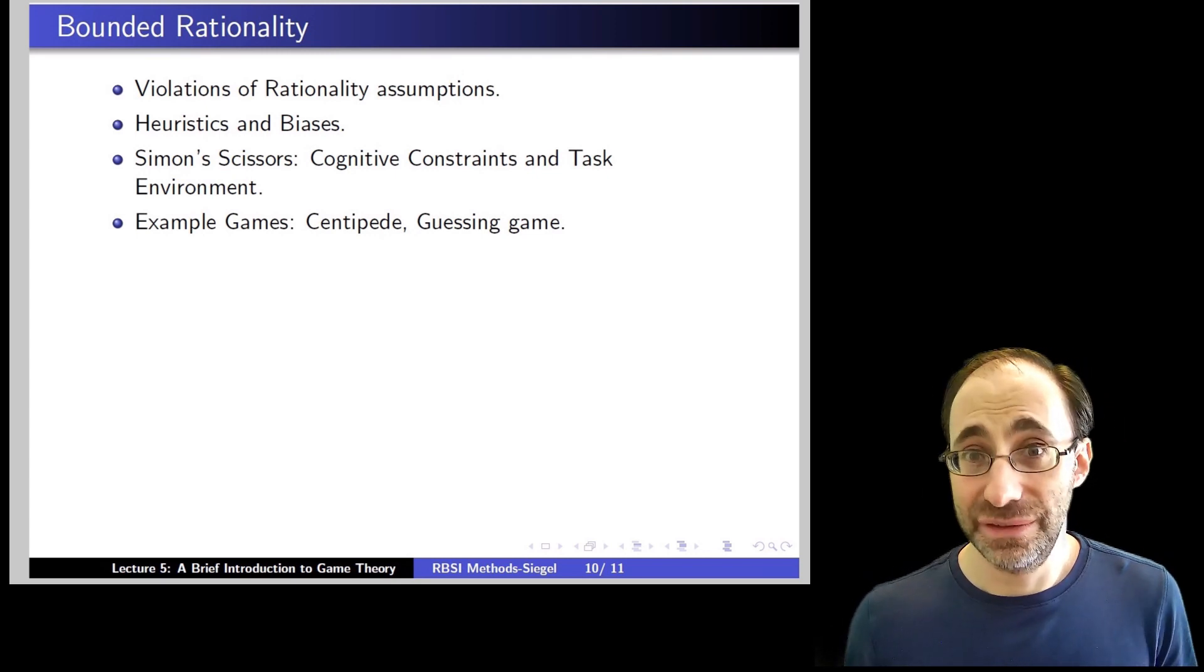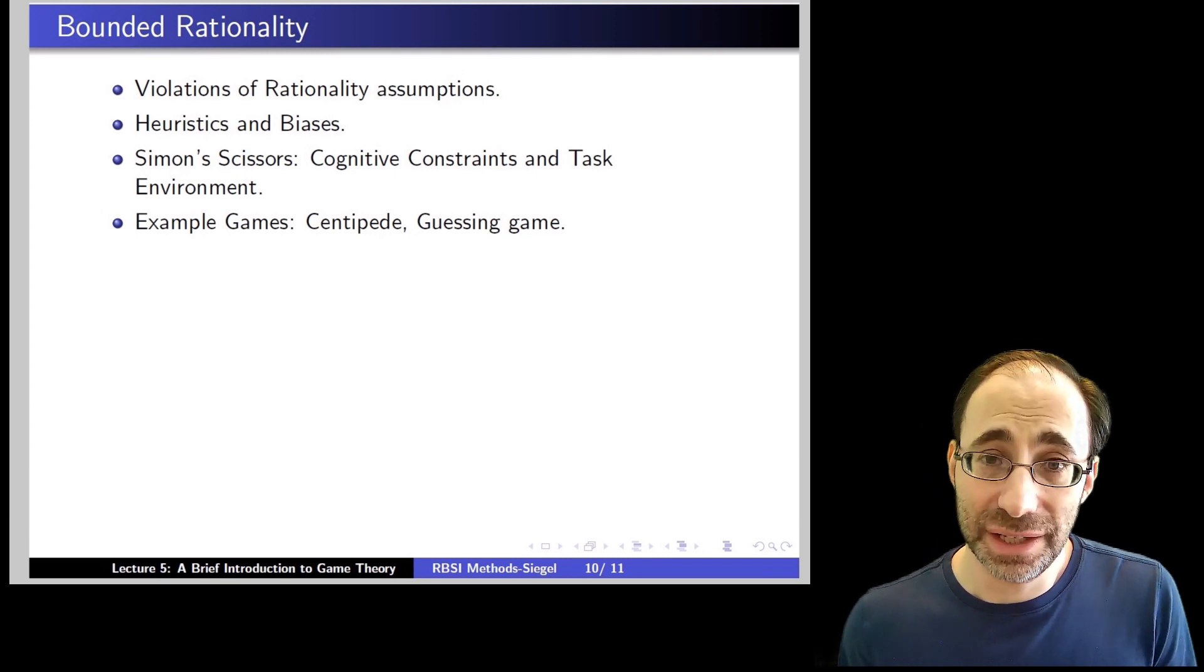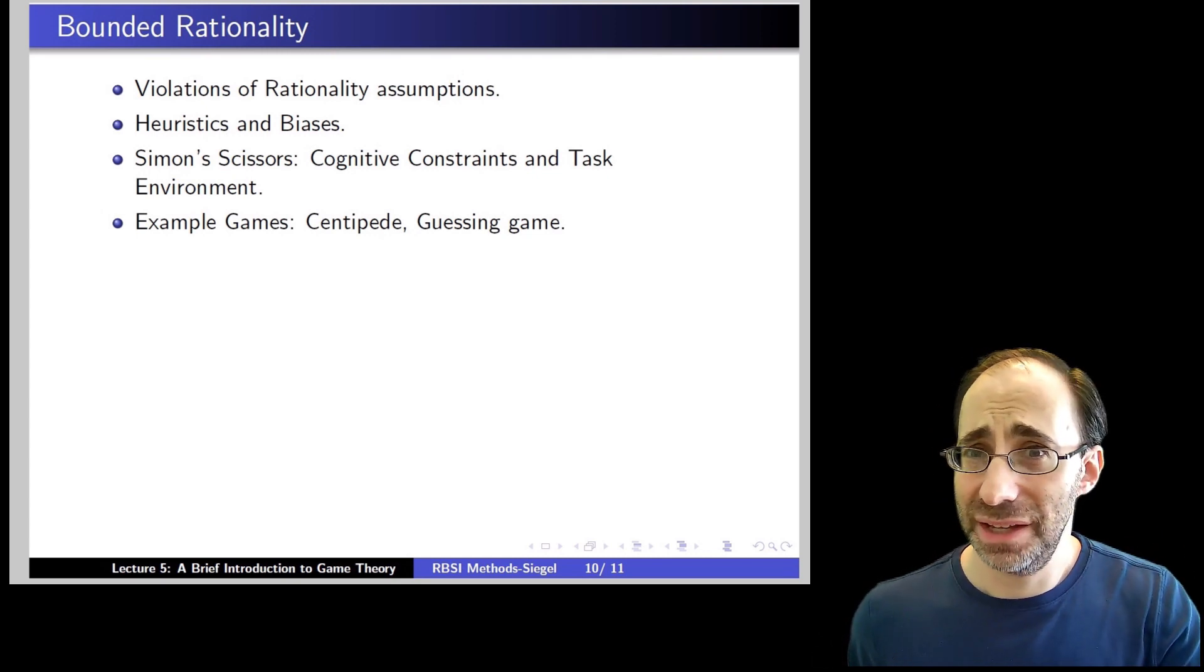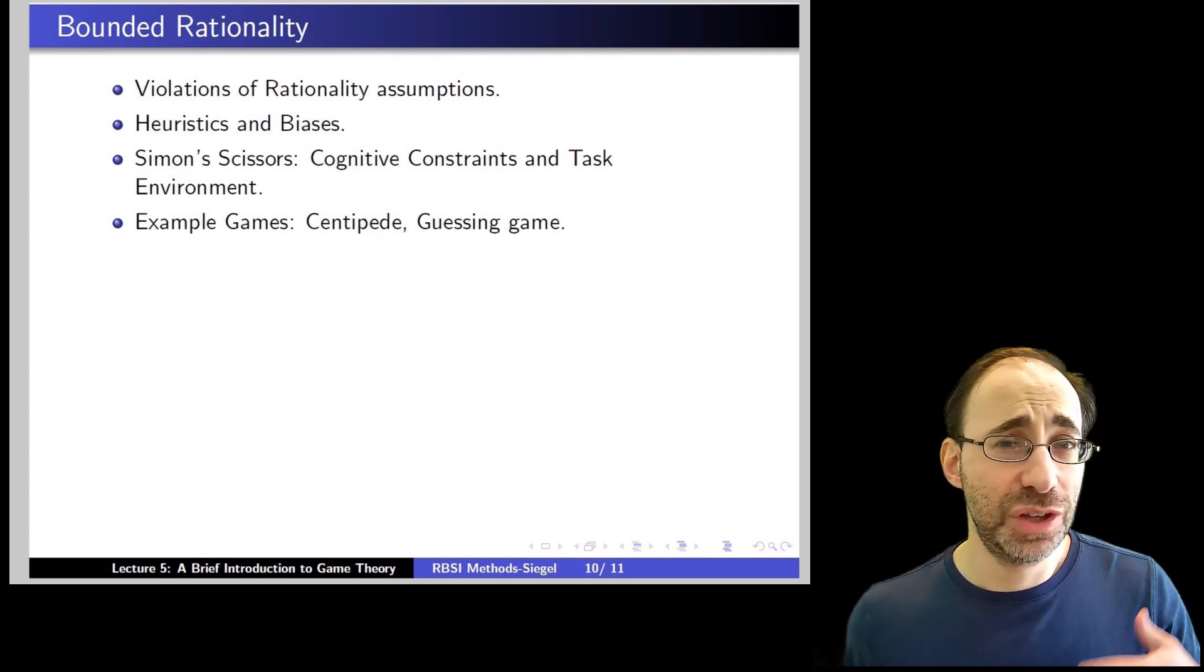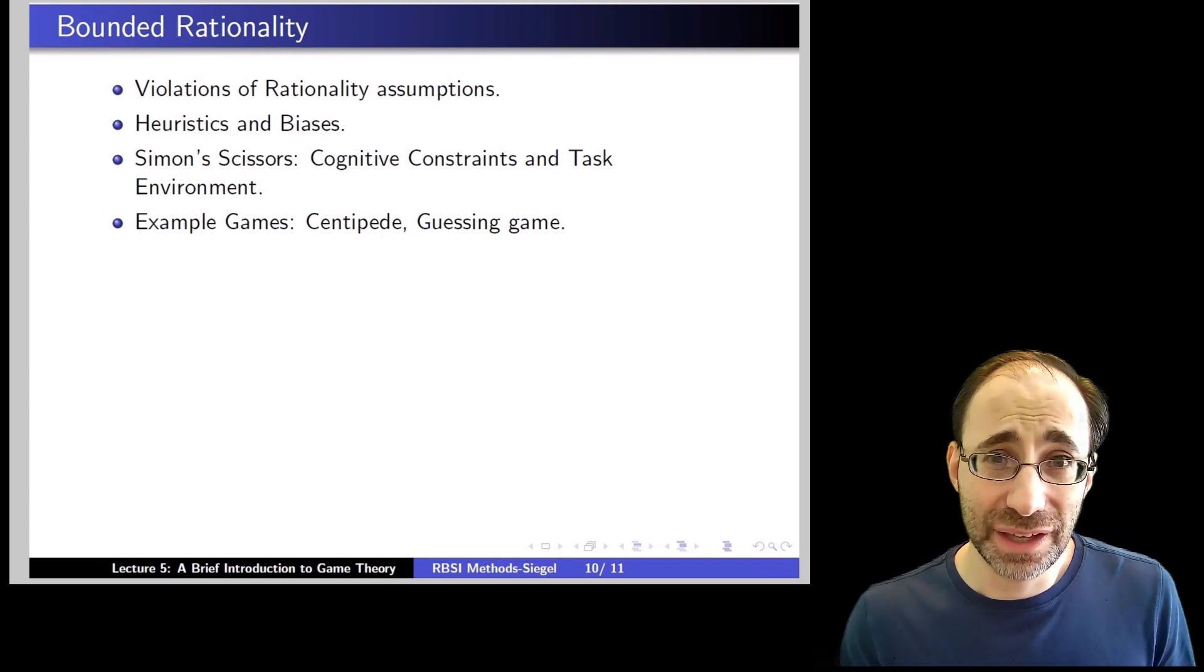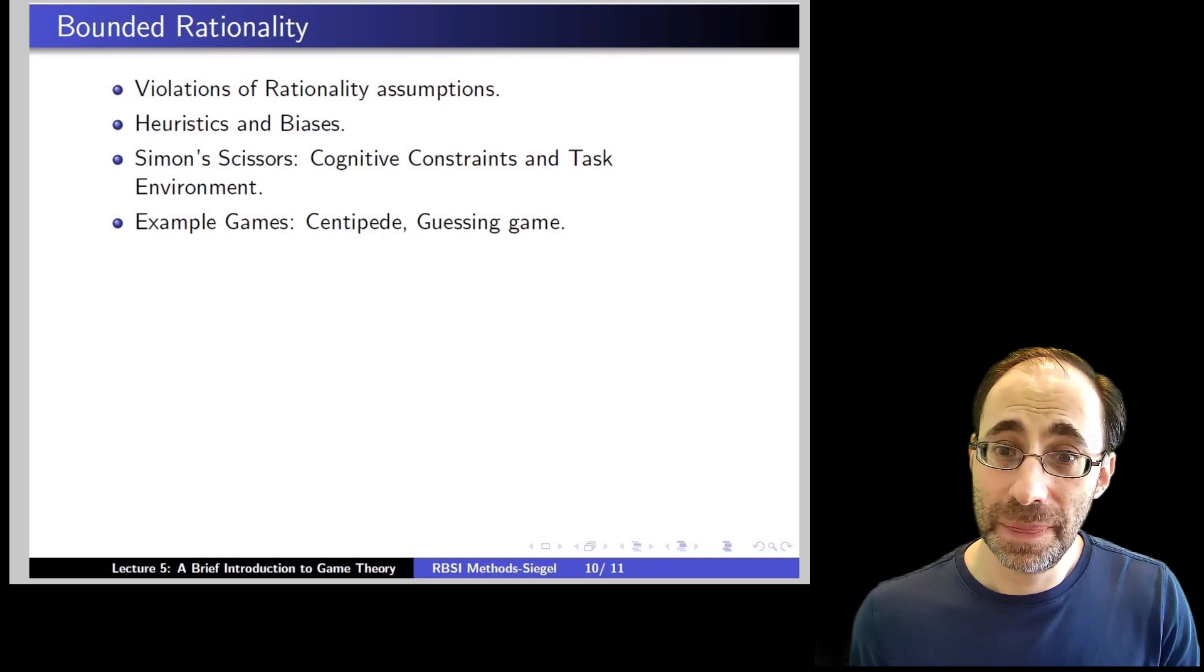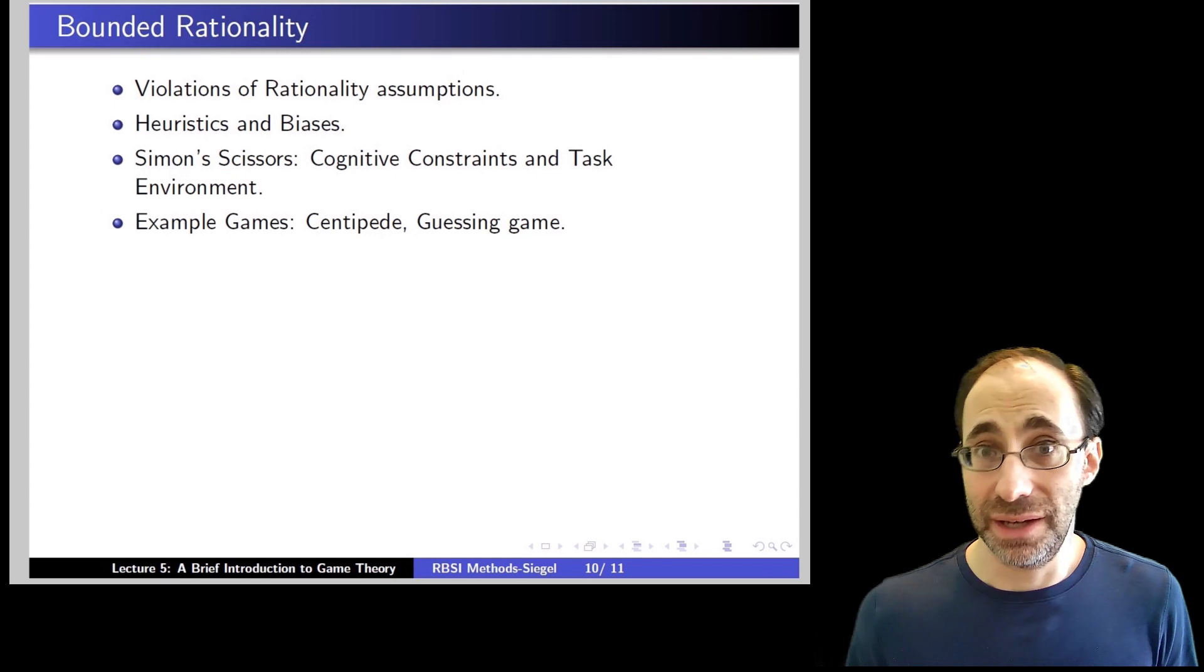The second blade of the scissors is the task environment. The task environment is how difficult the problem is. It might be the case that you have very strong cognitive constraints. You don't want to put time into this at all, but you just know the answer really easily because it's an easy problem. Once you do the prisoner's dilemma 3,000 times, you know you're supposed to defect immediately. And so you behave optimally, even though you don't think about it at all. So the cognitive constraints for themselves isn't enough.